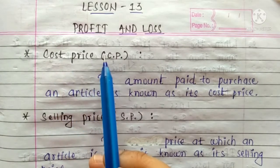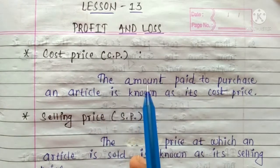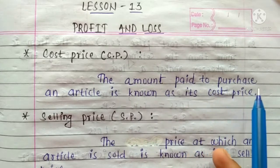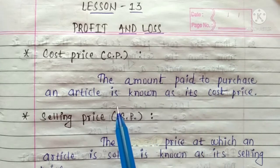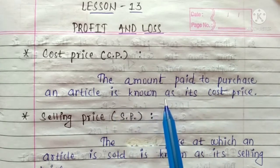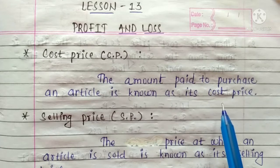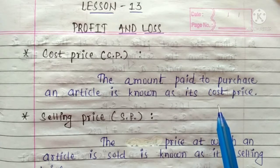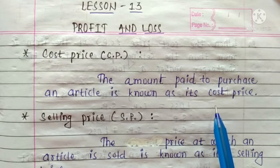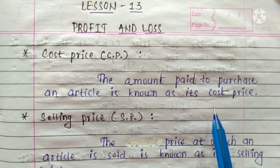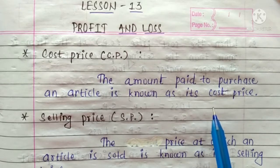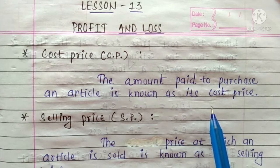Cost Price: The amount paid to purchase an article is known as its cost price. That means, कोई भी item purchase करने के लिए जो amount paid किया है उसको हम बोलेंगे cost price.